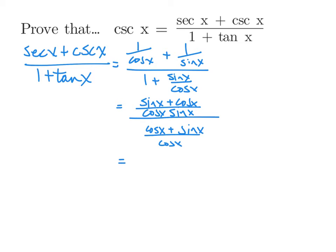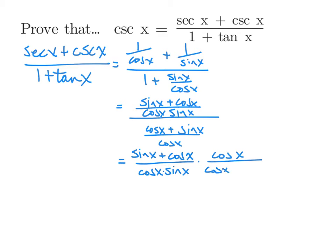Now we have a fraction divided by a fraction. Dividing by a fraction is the same as multiplying by the reciprocal. So we have sine of x plus cosine x over cosine times sine, and then we multiply by the reciprocal of the denominator: cosine over cosine x plus sine x. Then we look to see if anything can cancel. We have sine plus cosine and cosine plus sine — those are the same, so they cancel. We also have cosine over cosine, and those two cancel as well.